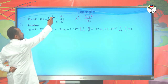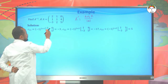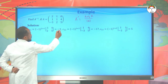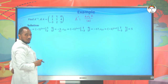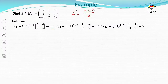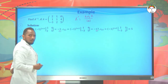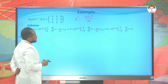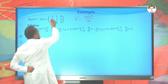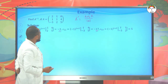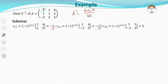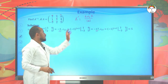For C₁₁, cancel the first row and column to get the 2×2 matrix [1, 4; 2, 5], giving determinant negative 3. For C₁₂, cancel the first row and second column to get [1, 4; -3, 5], times negative one to the power 1+2, giving negative 17. For C₁₃, the sign is positive; cancel the first row and third column to get [1, 1; -3, 2], giving determinant 5. We use the sign pattern: plus, minus, plus; minus, plus, minus; plus, minus, plus to determine cofactor signs.